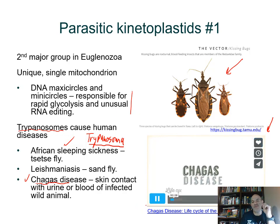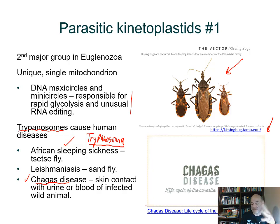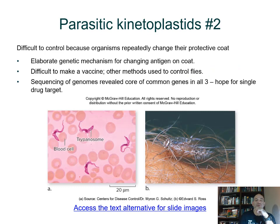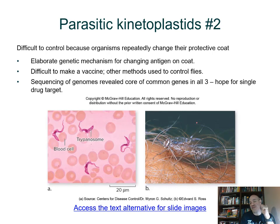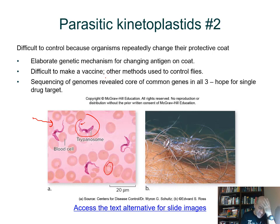African sleeping sickness is caused by another Trypanosoma. The vector insect for Chagas disease transmits Trypanosoma cruzi. For African sleeping sickness, the vector is the tsetse fly. In a blood sample of an infected individual, you can see the trypanosome, its flagella, and an undulating membrane, alongside red blood cells.